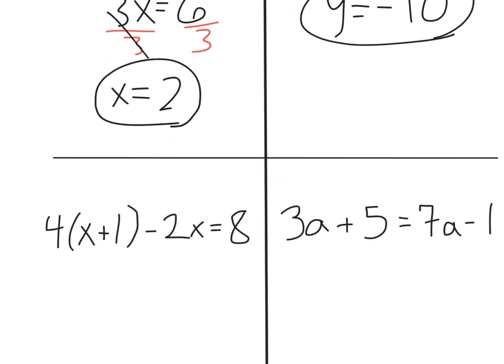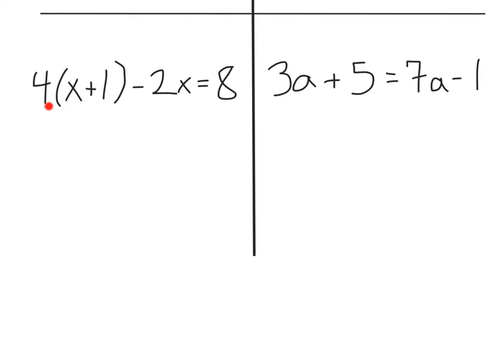Onward! Here we have 4 times (x + 1) minus 2x equals 8. I see that I have the opportunity to distribute here, so I'm going to do that first. That often helps things out. So, I have 4 times x is 4x plus 4 times 1 is going to be plus 4. I still have that minus 2x equals 8.